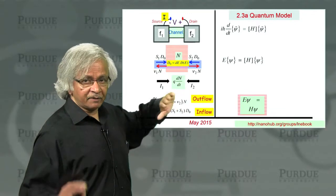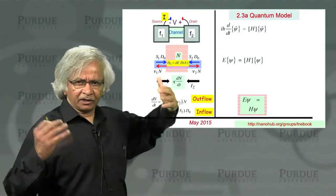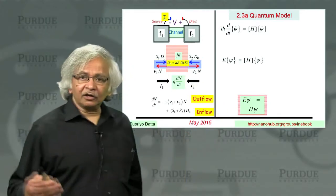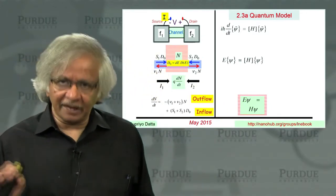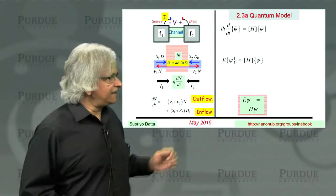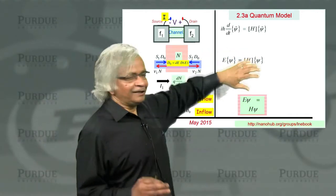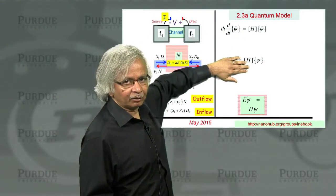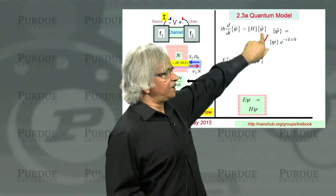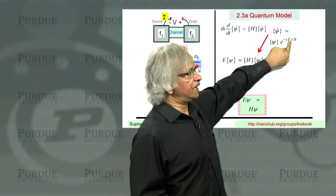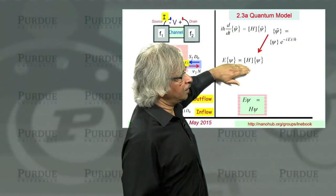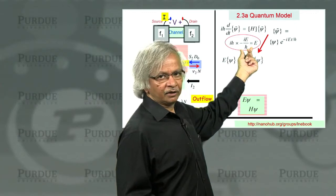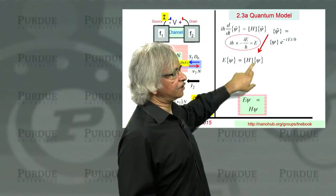In order to see this inflow and outflow, you need to go to the time-dependent Schrodinger equation. By and large, we are talking of steady state, so there is not much explicit time dependence we'll actually be discussing. But in terms of understanding the current, occasionally in the next two or three lectures, we'll have to go back to the time-dependent one. The connection between them is that the time-dependent psi-tilde has this exponential minus iEt over h-bar, and the way you get from there to the time-independent equation is by noting that taking the time derivative is just like multiplying with minus iE over h-bar, so effectively you just multiply by E.